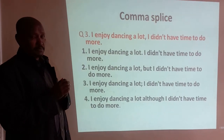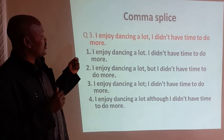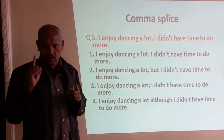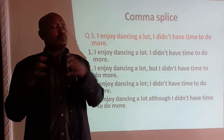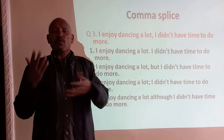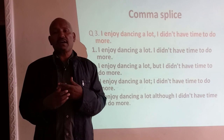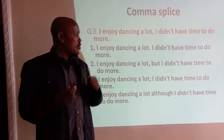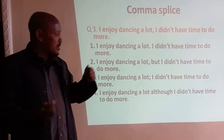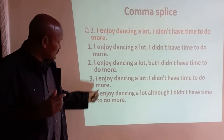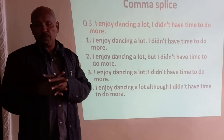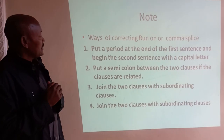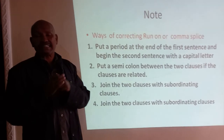The third example: 'I enjoy dancing a lot, I didn't have time to do more.' The problem is comma splice, because there is a comma between two independent clauses. This wrong use of comma makes the sentence incomplete and meaningless. The four corrections are: put a period between the two clauses; put a comma before a coordinating conjunction; put a semicolon between the two independent clauses; or place a subordinating conjunction between the two independent clauses.